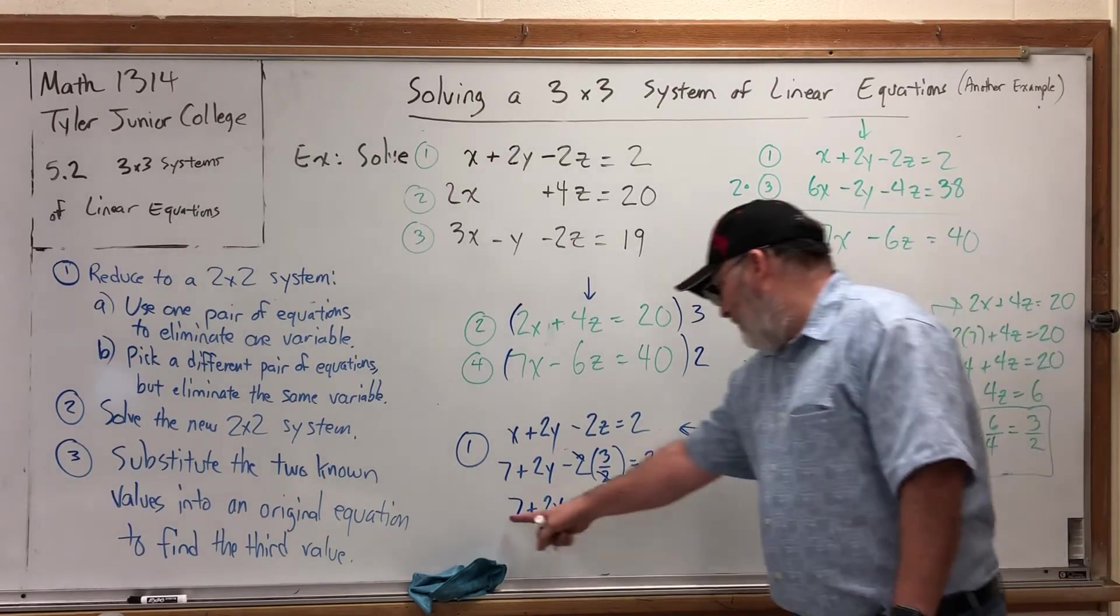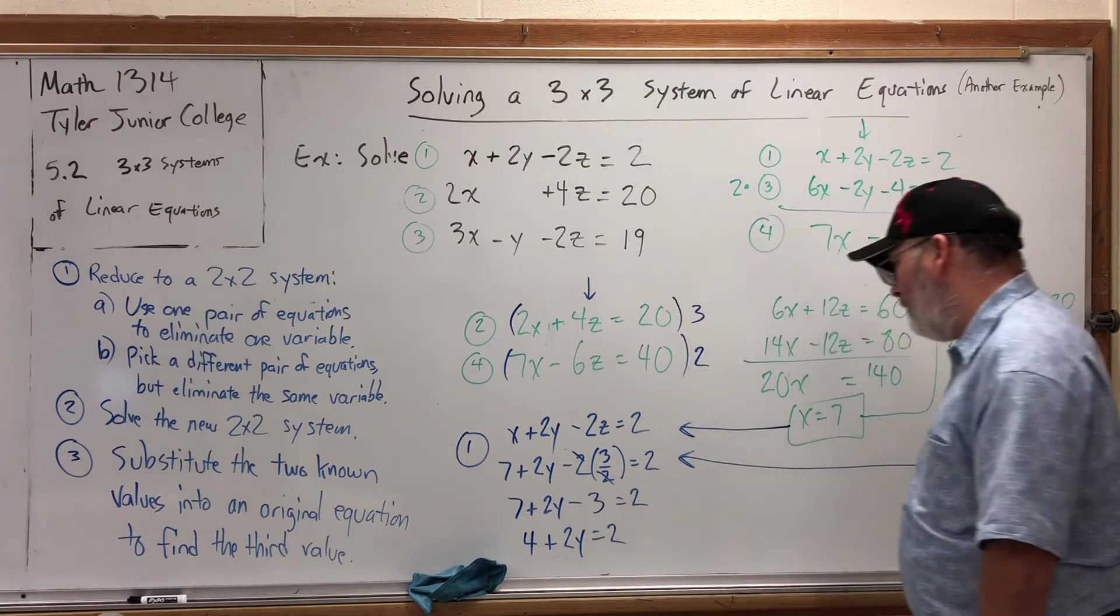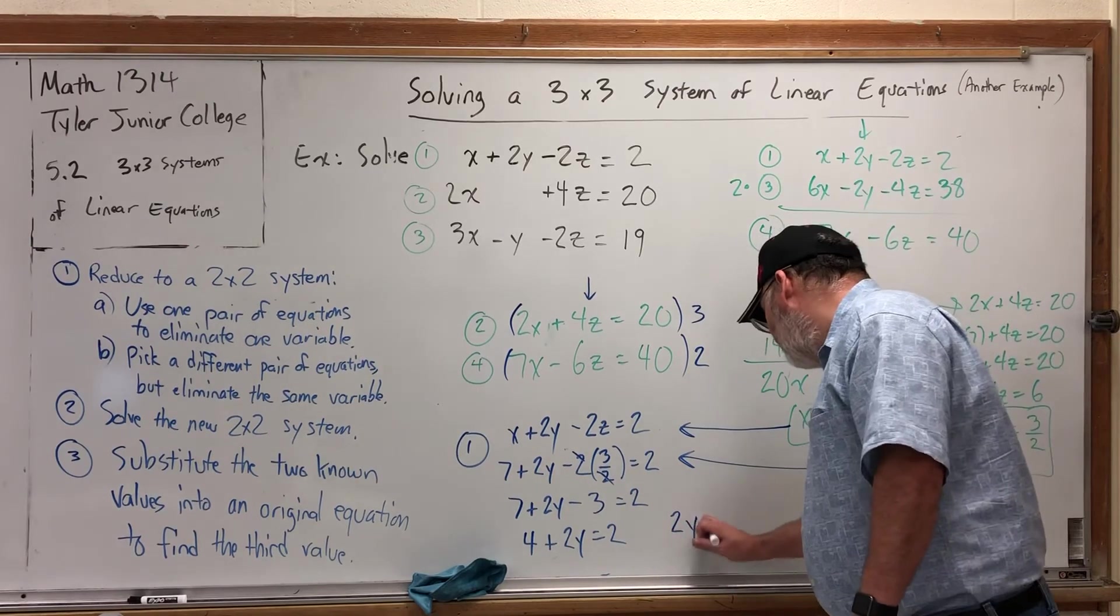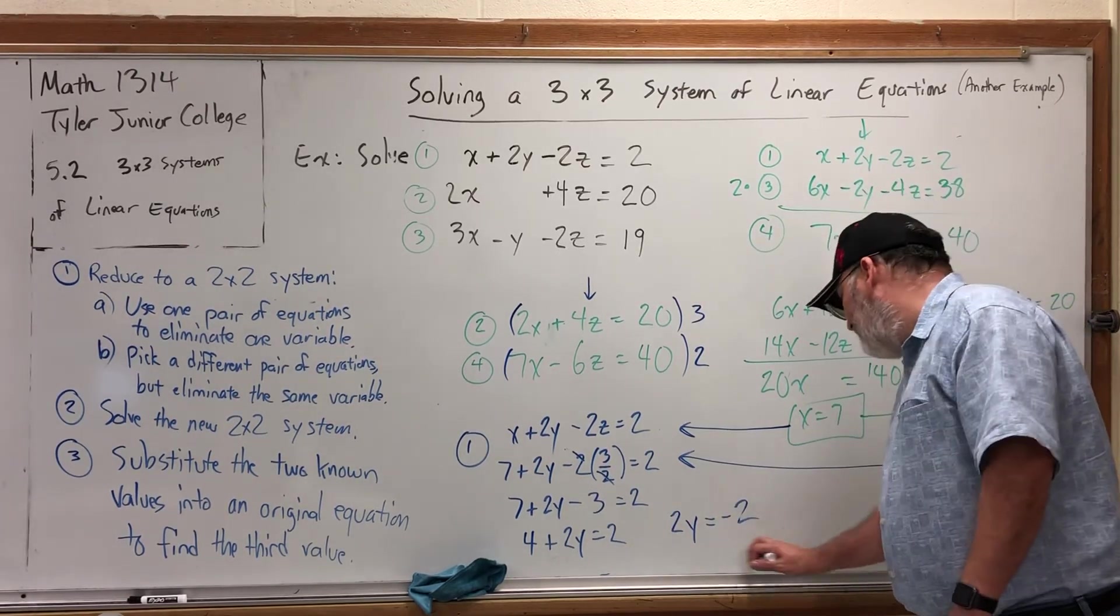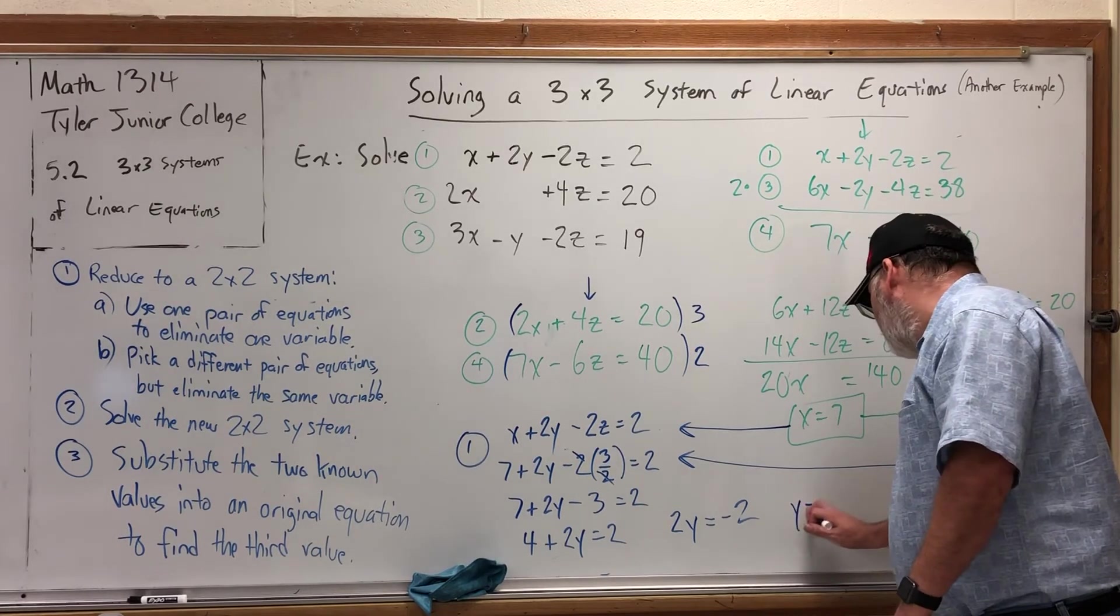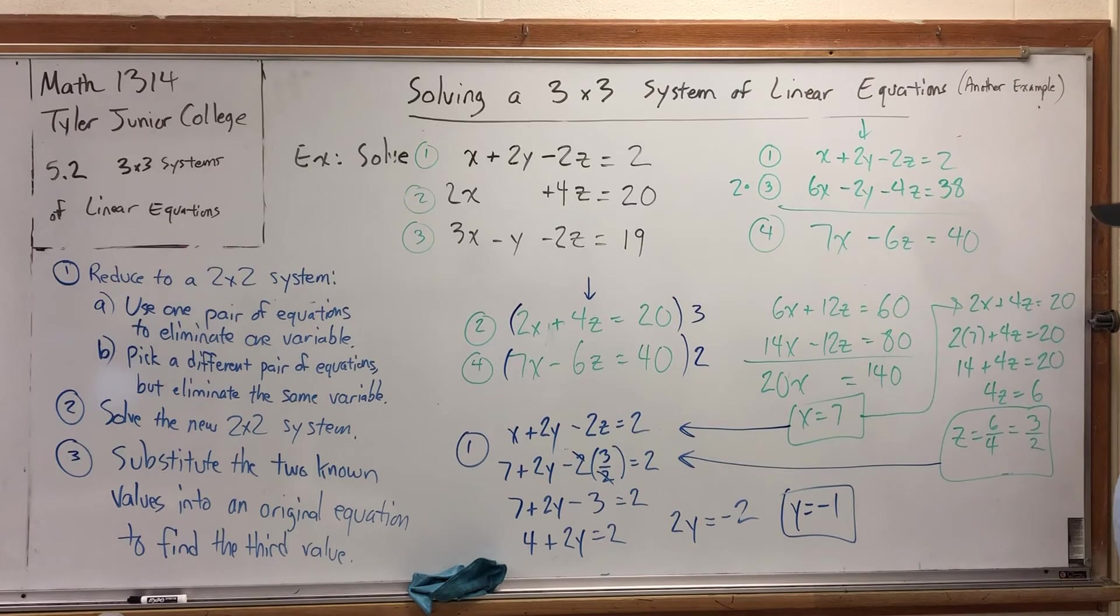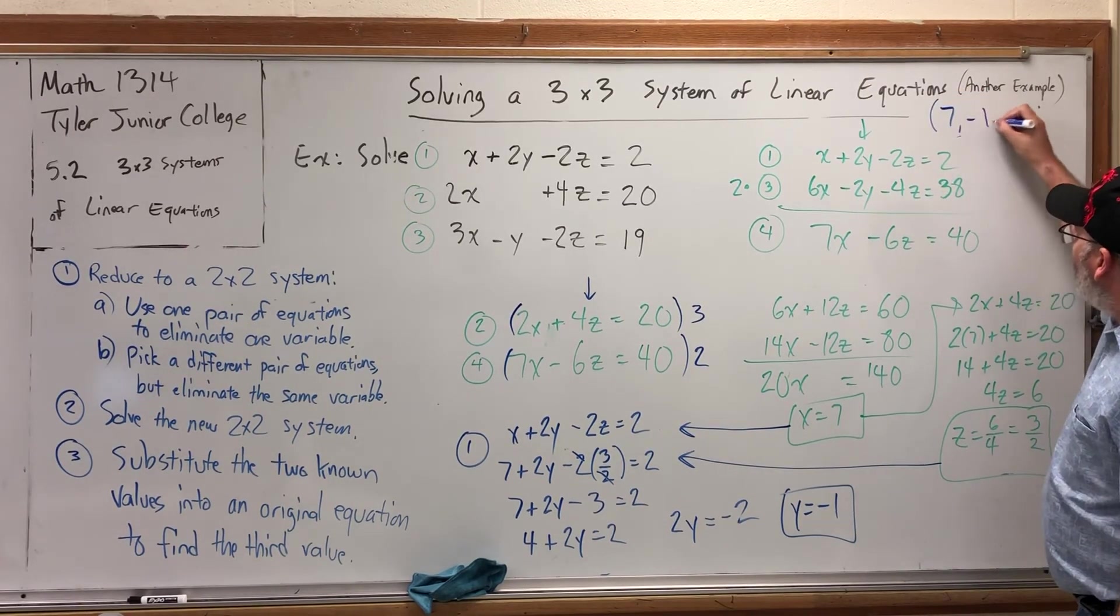Let's combine the 7 and the negative 3 to get 4 plus 2y equals 2. Subtract 4 from both sides to get 2y equals negative 2. Watch your signs. Divide both sides by 2 to get y equals negative 1. Our solution seems to be 7 comma negative 1 comma 3 halves.